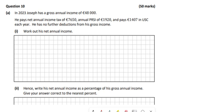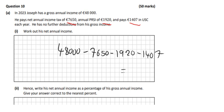Hi folks, this is question 10 and all we need to do here for the first part is just take away all of these things. So he earns the 48,000 but he pays 7,650, 1,920 and 1,407 all in different tax. So we do 48,000, subtract each of them.